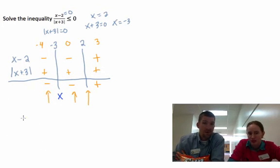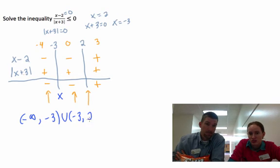So we go from negative infinity to negative three, but we don't include negative three, can't include negative three. And then we go from negative three to two, but we do include two because two is zero. That is correct, there you have it.